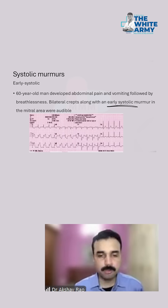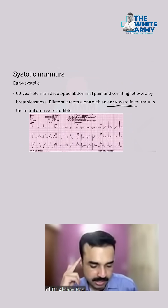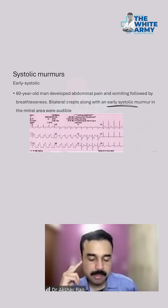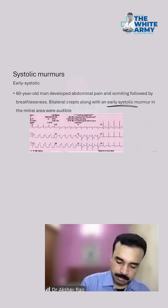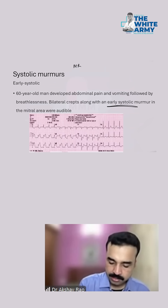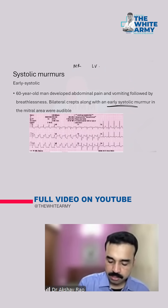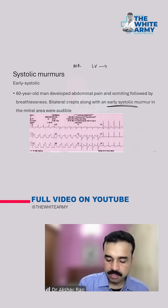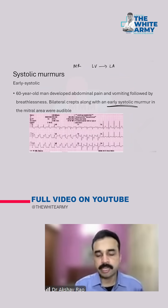So why is the murmur pan-systolic in mitral regurgitation? In mitral regurgitation, the blood is regurgitating from the left ventricle into the left atrium. So at any given time, the left atrial pressure will always be lesser than left ventricular pressure.